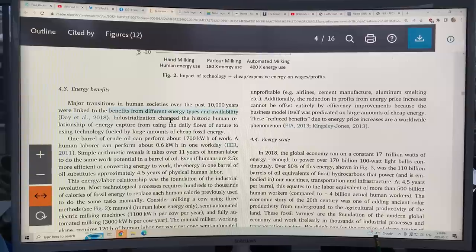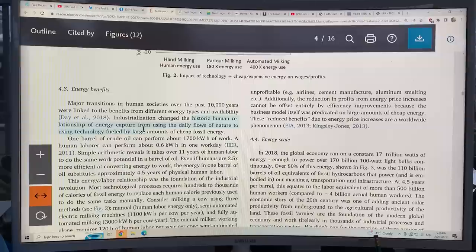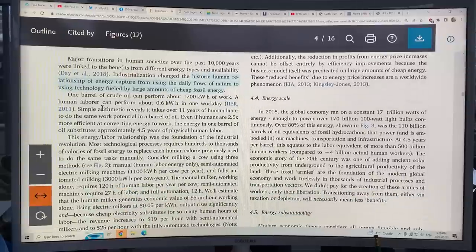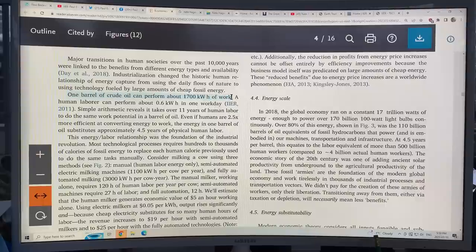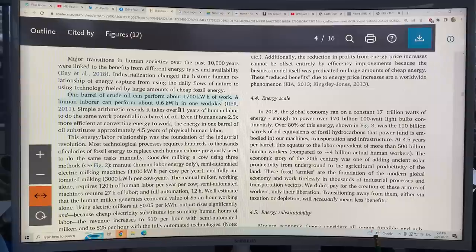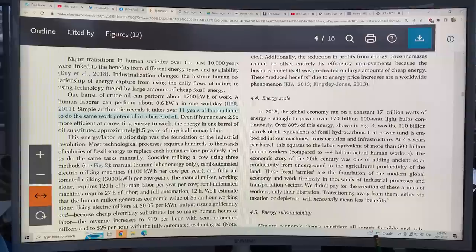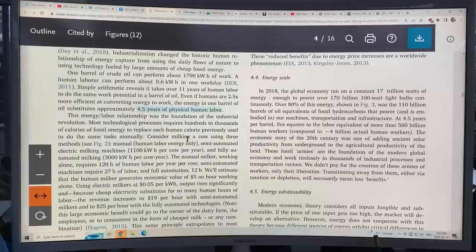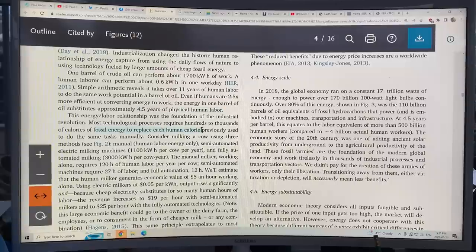So the major transitions in human societies over the past 10,000 years were linked to the benefits from different energy types and availability. Industrialization changed the historic human relationships of energy capture from the daily flows of energy to using technology fueled by large amounts of cheap fossil energy. Now this is the crux of the whole thing. One barrel of crude oil can perform about 1700 kilowatt hours of work. A human laborer can perform about 0.6 kilowatt hours in one workday. So it takes 11 years of human labor to do the same work potential as a barrel of oil.